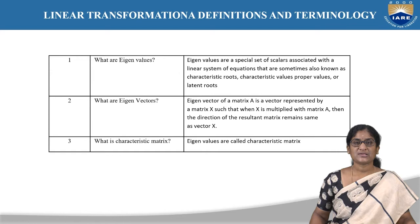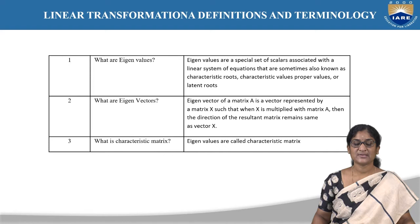The very first definition of the linear transformation is what is an eigenvalue. An eigenvalue is a special set of scalars associated with a linear system of equations, sometimes also known as characteristic roots, proper values, or latent values. There are four names for eigenvalues — characteristic roots, characteristic values, proper values, or latent roots — all of these are one and the same.